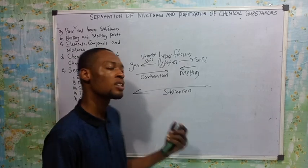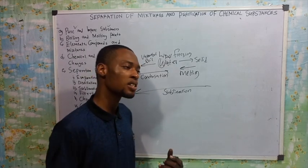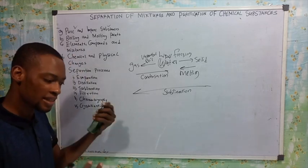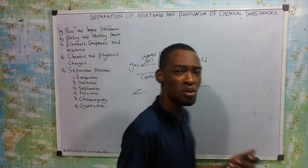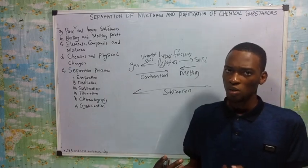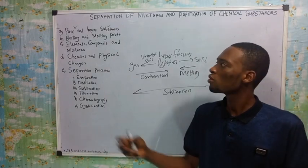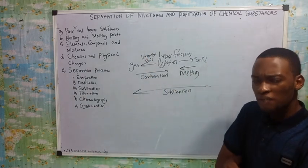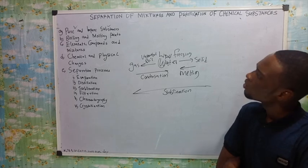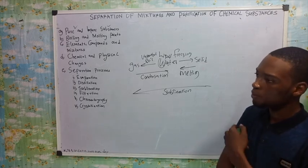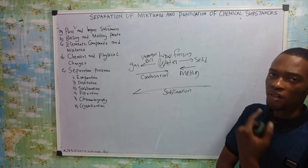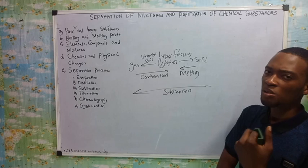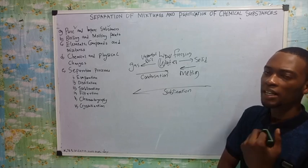The melting point of a substance is the temperature at which it begins to change from solid to liquid. Melting and boiling points are tests for purity — to know whether a substance is pure or not. A pure substance will have a definite boiling point and a sharp melting point. Exception: azeotropic mixtures have a constant boiling point, so you can't use such tests to determine if they are pure.